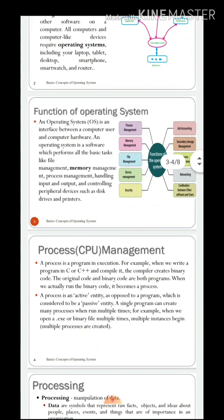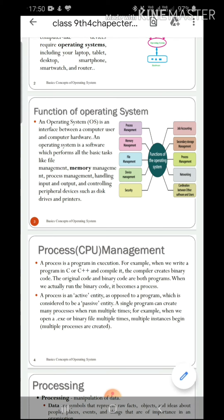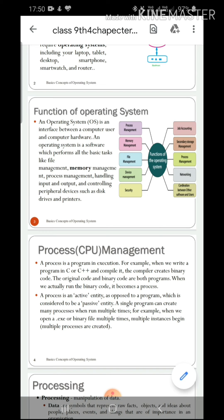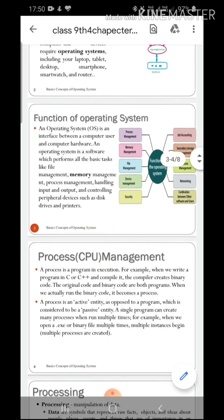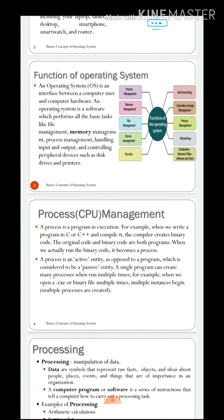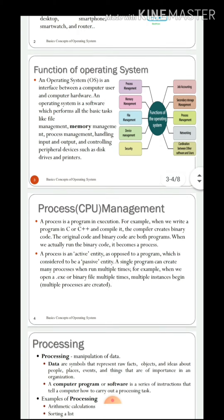Next, process management. Process CPU — what is a process? A process is a program in execution. For example, when we write a program in C or C++ and compile it, the compiler creates a binary code. The original code and binary code are both programs. When we actually run the binary code, it becomes a process. What is a compiler? It is the process that converts high-level language to low-level language.